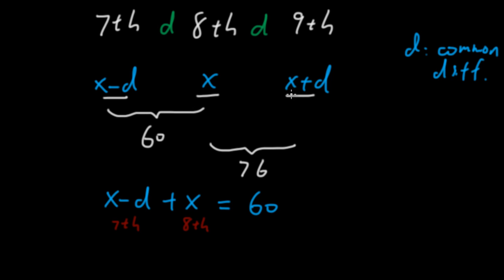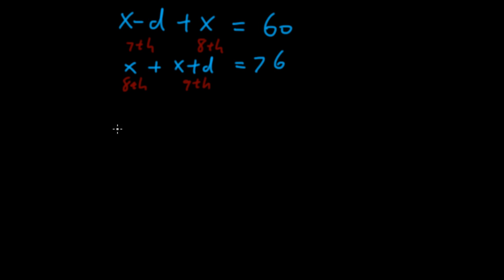And for this relationship, we have x plus x plus D equals 76. With this being the 8th term, and x plus D is the 9th term. I'm going to present multiple ways of solving this equation system. Now let's simplify these equations first. The first equation, the left hand side, is 2x minus D. 2x minus D equals 60. And for the second equation, it's 2x plus D. 2x plus D equals 76.